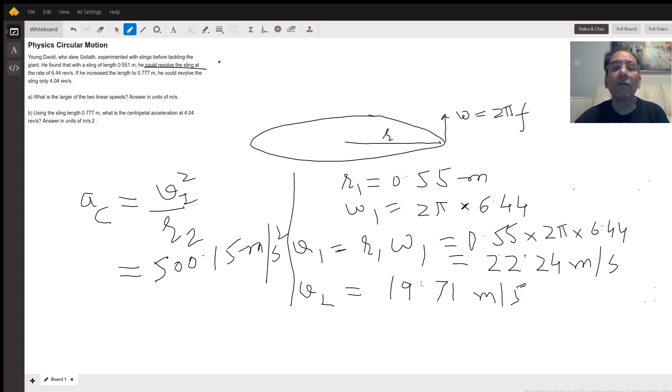So v1 equals r1 omega1, which is r1, which is 0.55, multiplied by 2 pi and then 6.44.